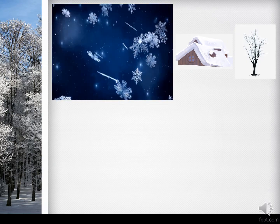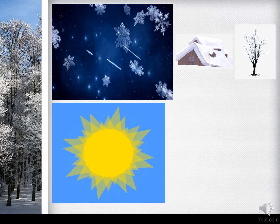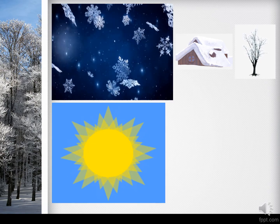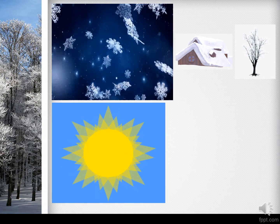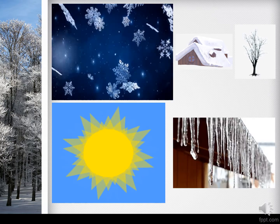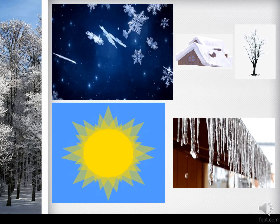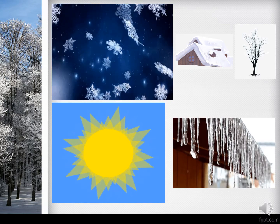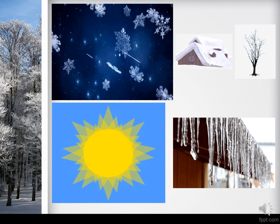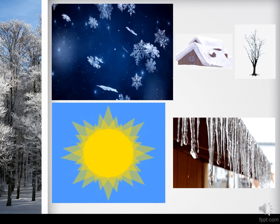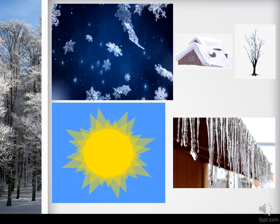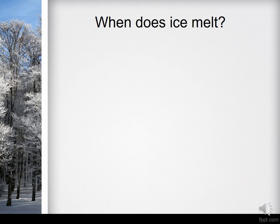But when warm sunlight appears and reaches the snow, it starts to melt — hence icicles are formed. These look like ice dripping off the roof of a house or branches of trees. When does ice melt?